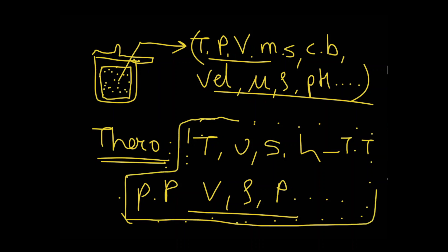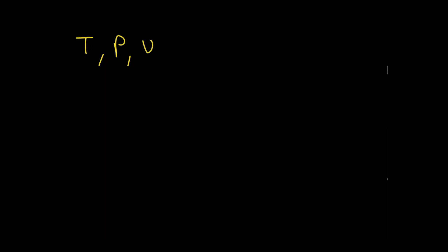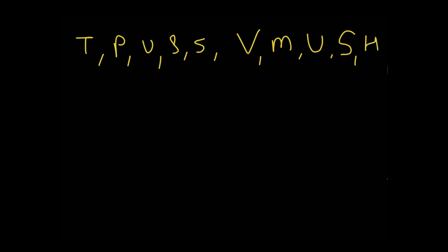Let me list some of these properties: temperature, pressure, internal energy, specific internal energy, density, specific entropy, volume, mass, internal energy, entropy, enthalpy, and so on. If you notice, this set of properties is a bit different from the other set of properties — and let me explain how.